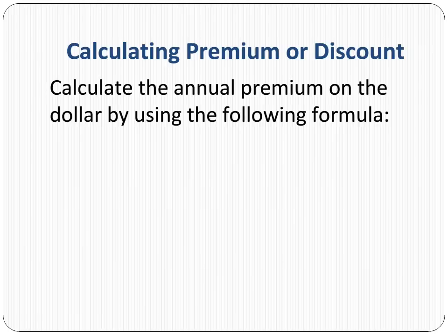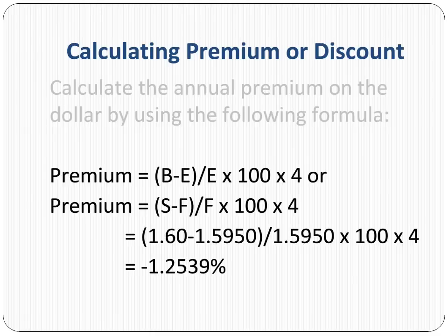If the pound is selling at a forward discount, the dollar is selling at a forward premium. The premium can be calculated using the following formula. Again, we are multiplying by 4 to convert the quarterly premium to the annual premium.